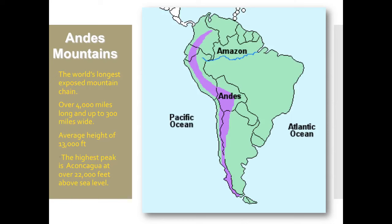The Andes Mountains are pretty incredible. They are the world's longest exposed mountain chain. From the northern tip to the southern tip, they're 4,000 miles long, and at their widest point in Bolivia, they're about 300 miles wide. Their average height is 13,000 feet. The tallest mountains in the lower 48 states of America are Mount Rainier and Mount Whitney at about 14,500 feet. The highest mountain in the Andes is Aconcagua at over 22,000 feet above sea level — figure out how many miles tall that is.